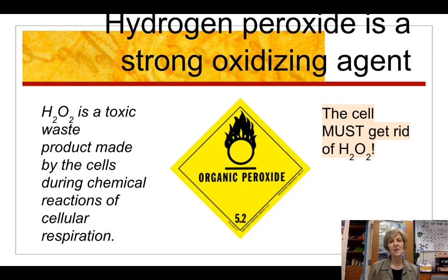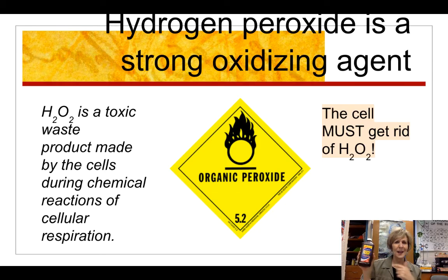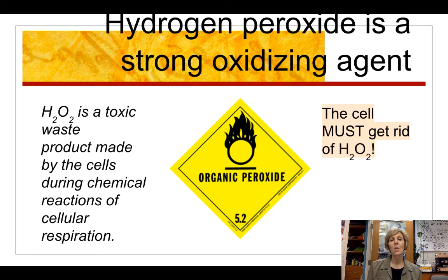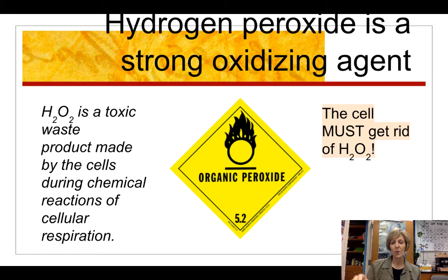Hydrogen peroxide is a very strong oxidizing agent, meaning it likes to grab electrons from other substances, which can be dangerous in a cell trying to maintain homeostasis. It's kind of like an unpredictable molecule to have around because it might steal your electrons. So the cell needs to get rid of hydrogen peroxide, which is why most cells make catalase — the enzyme that breaks it down.